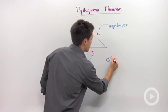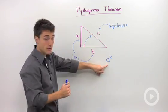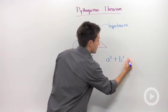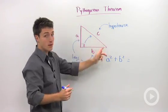There exists this relationship that if you take one of the legs and square it, and add it to the other leg squared, that's going to equal the square of the hypotenuse.